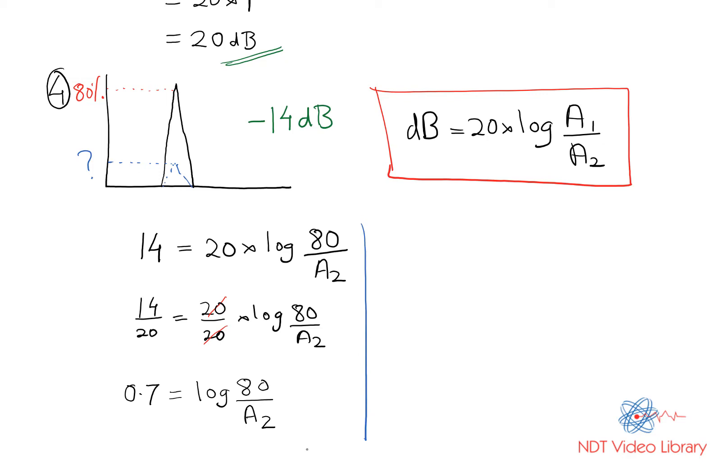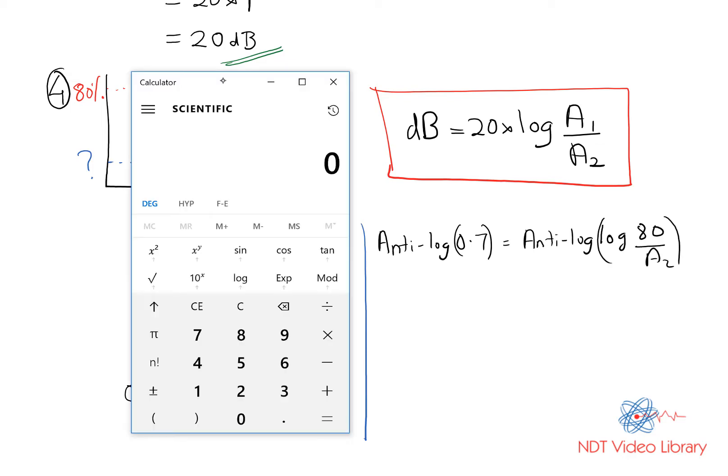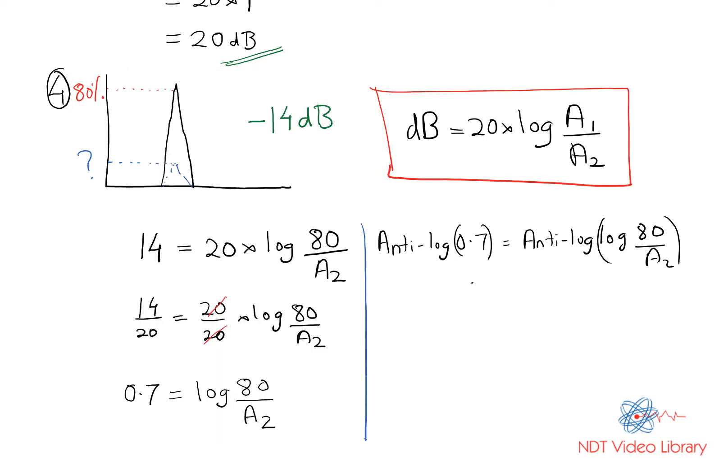Now in order to get rid of the log you have to take anti-log on both sides. The way you use anti-log on calculator is by using 0.7 and then use that 10 to the power x function right next to the log. Click that and you get 5.011, so I round it off as 5. Anti-log of 0.7 is 5, and anti-log of log cancels out, so what stays is just 80 divided by A2.